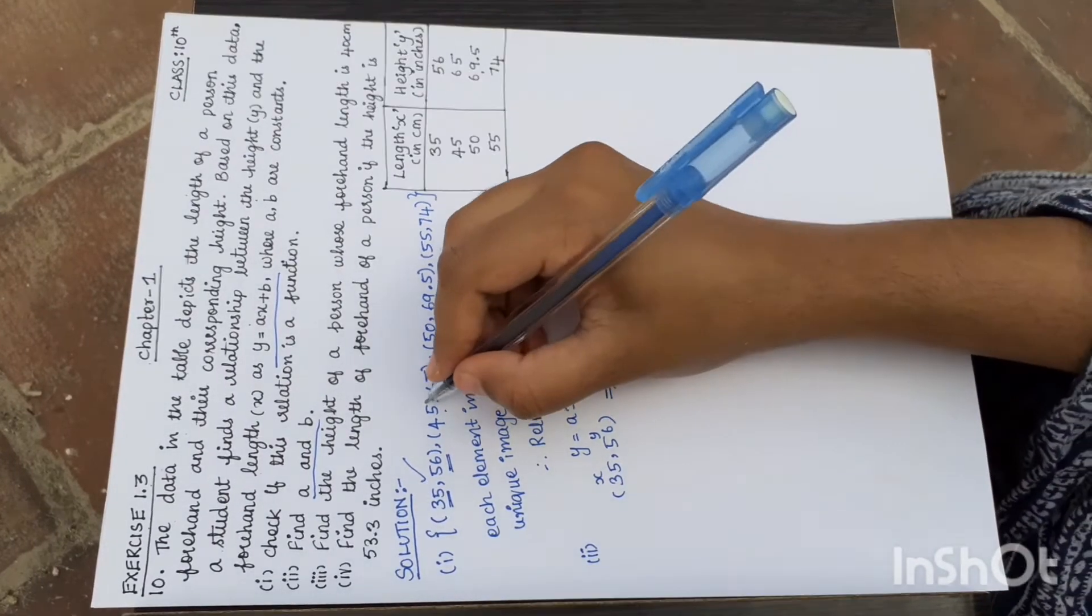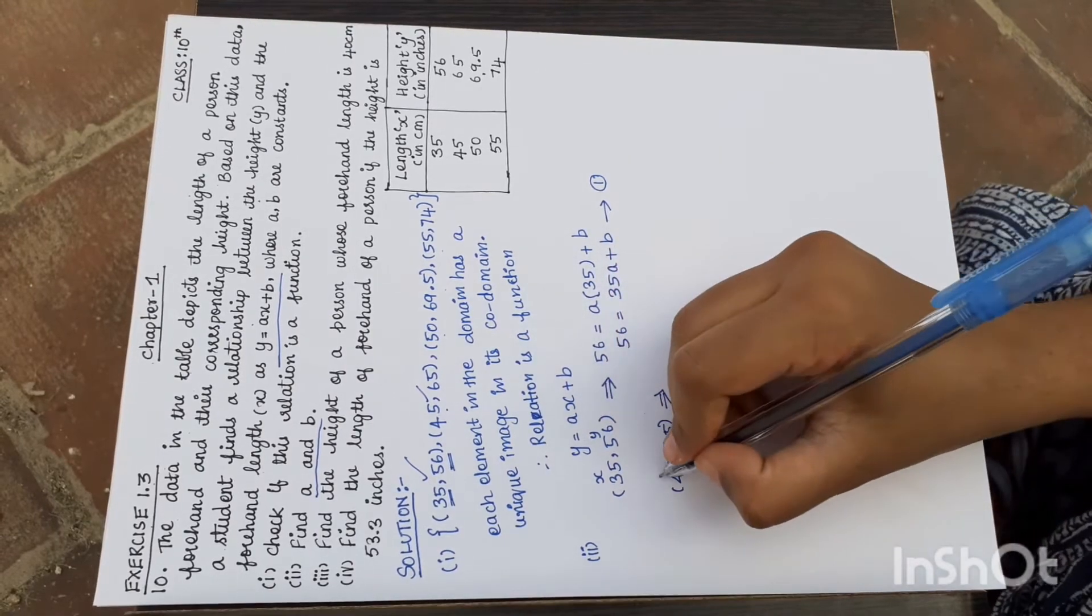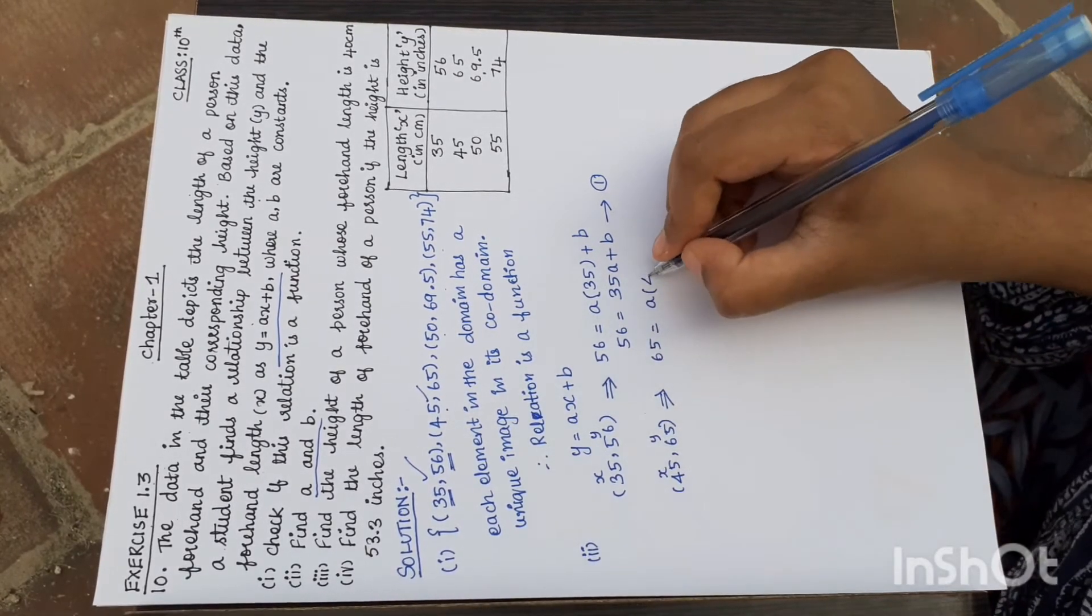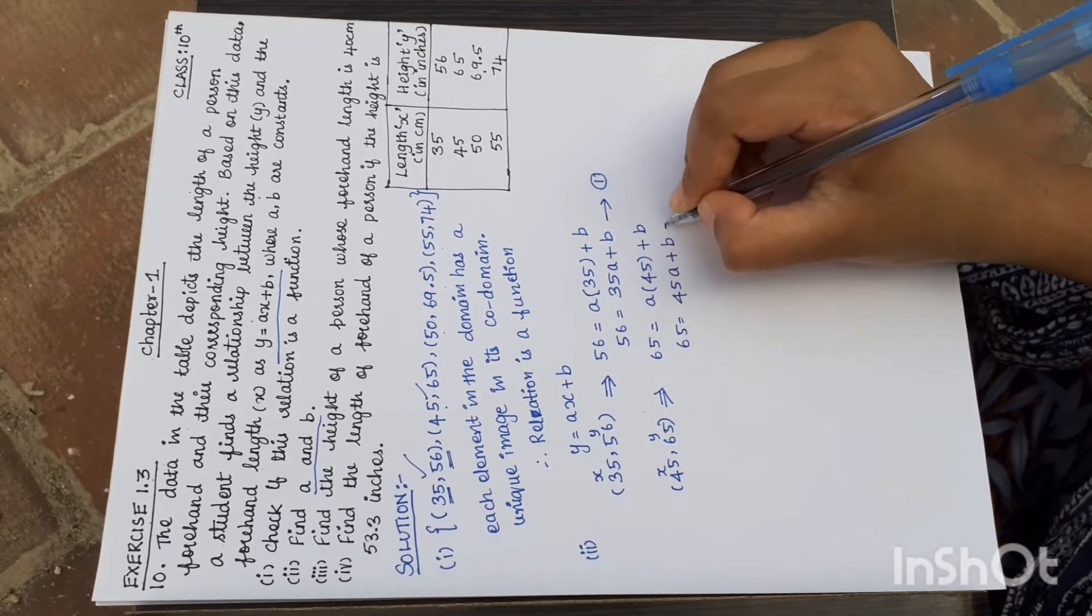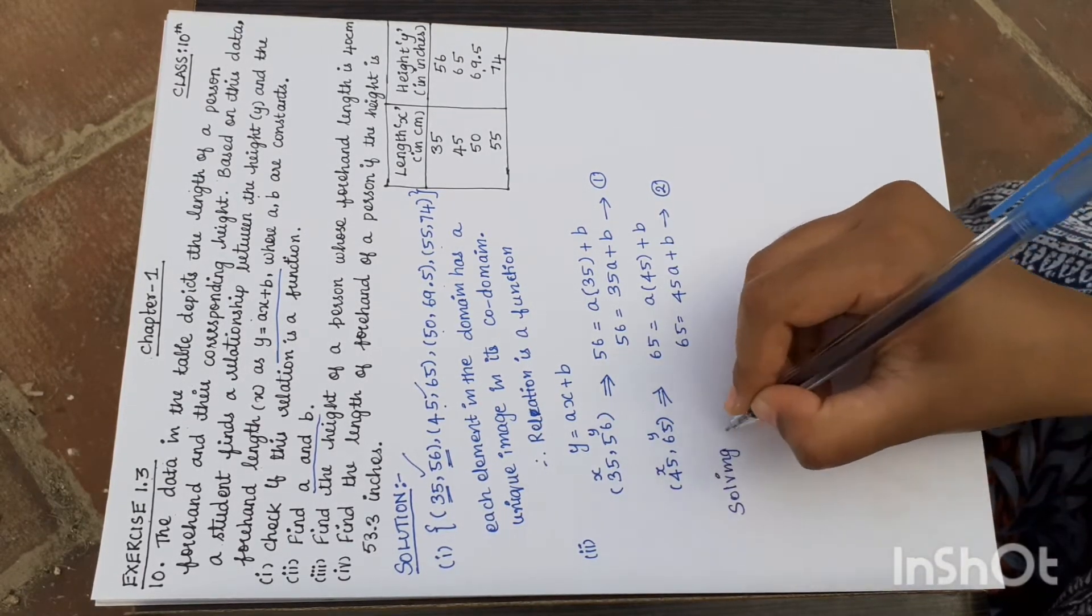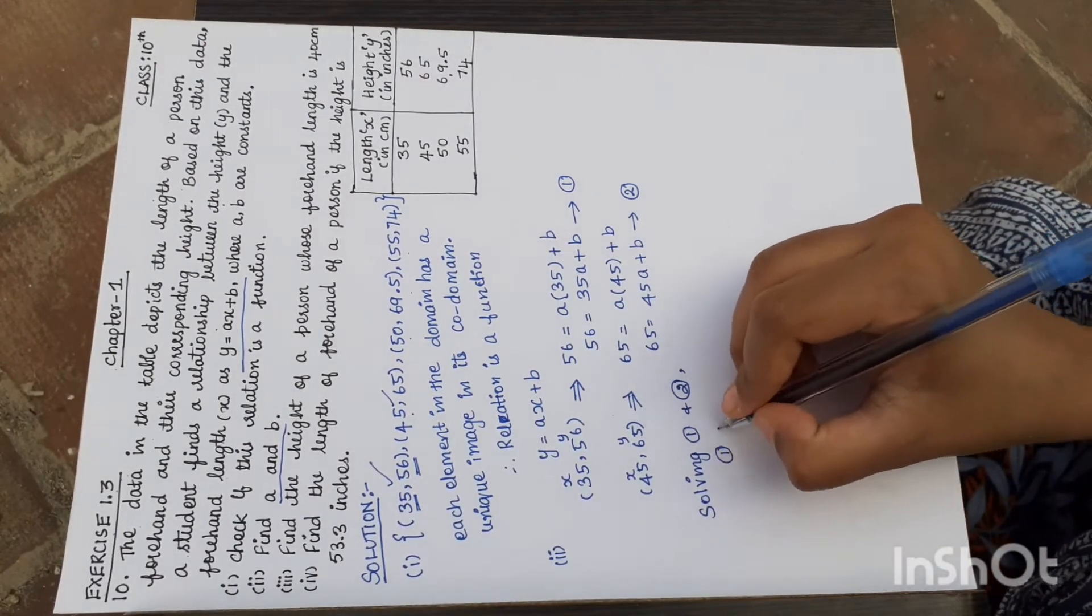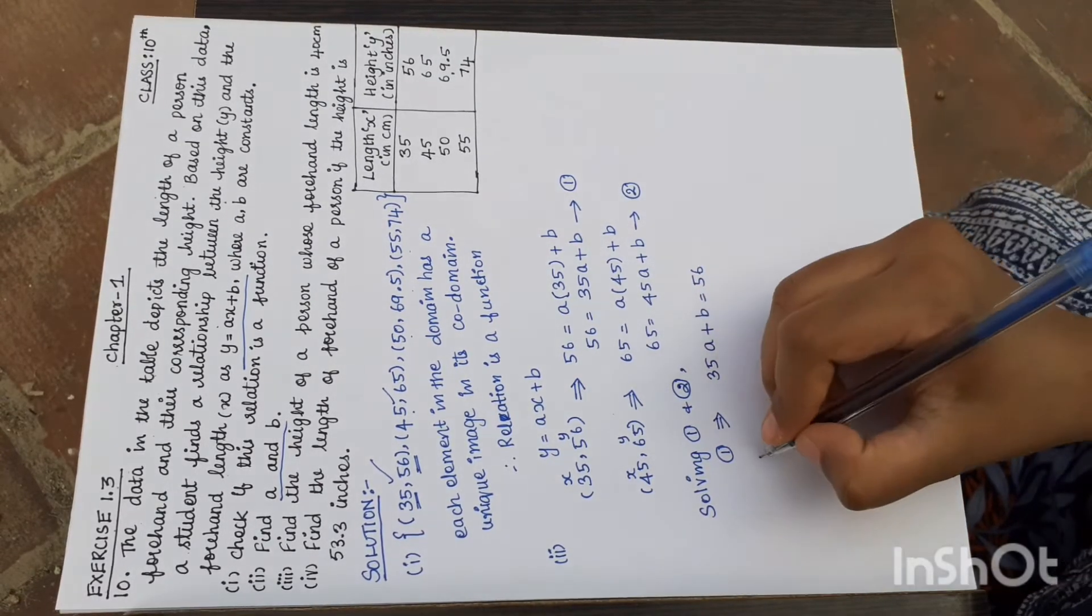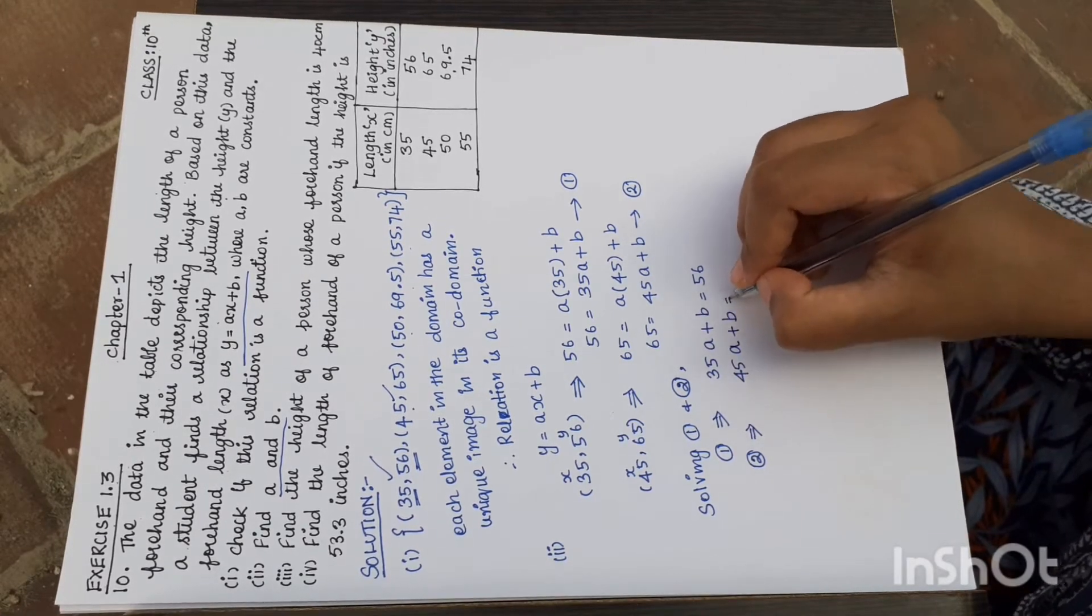The second set of values is 45, 65. So 65 equals a times 45 plus b. This is equation 2. Now we need to solve equations 1 and 2.